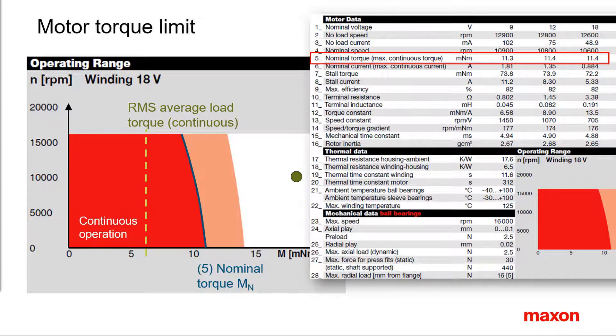A suitable motor for our application needs a nominal torque that is larger than the root-mean-square average torque required by the load.